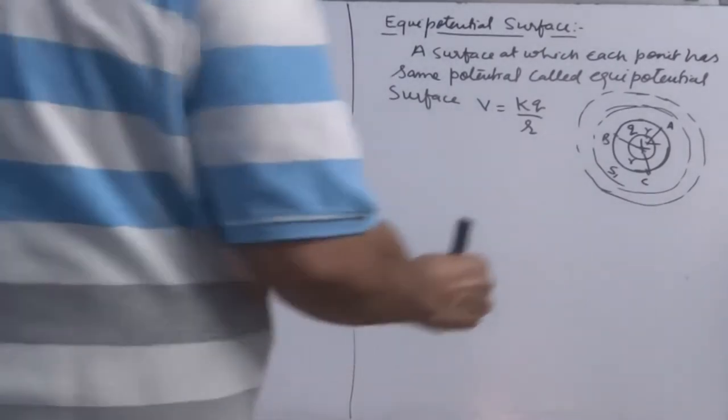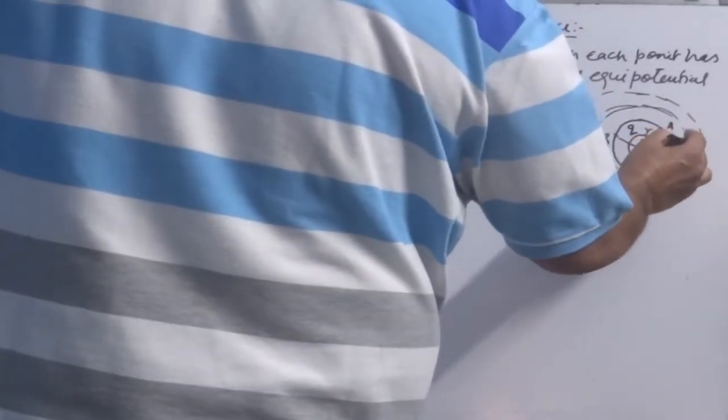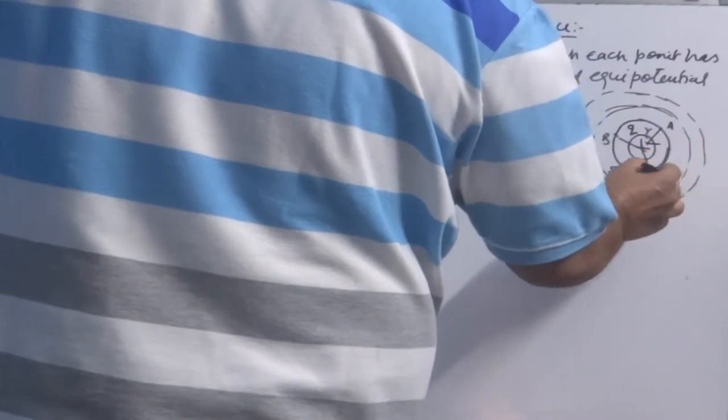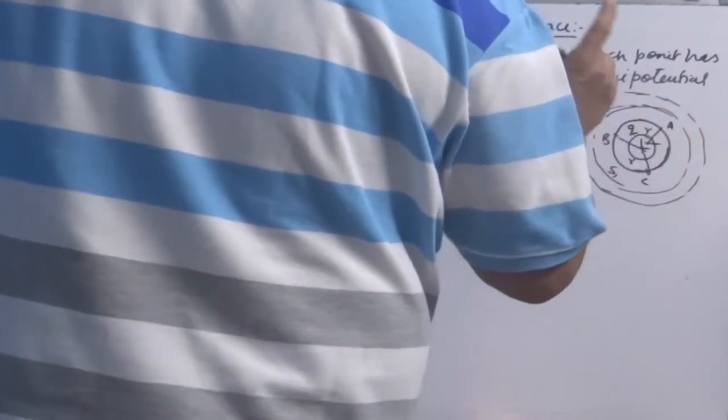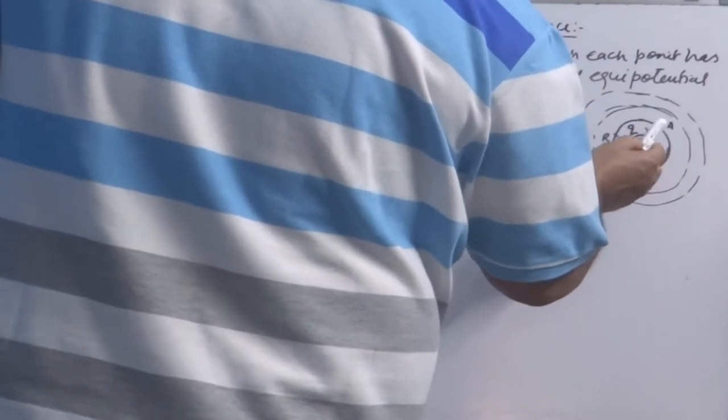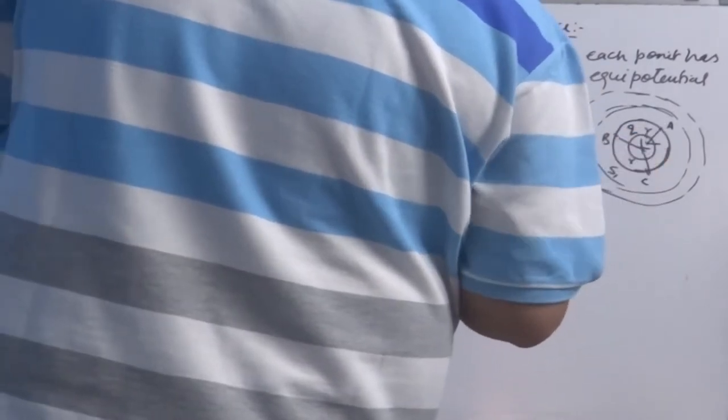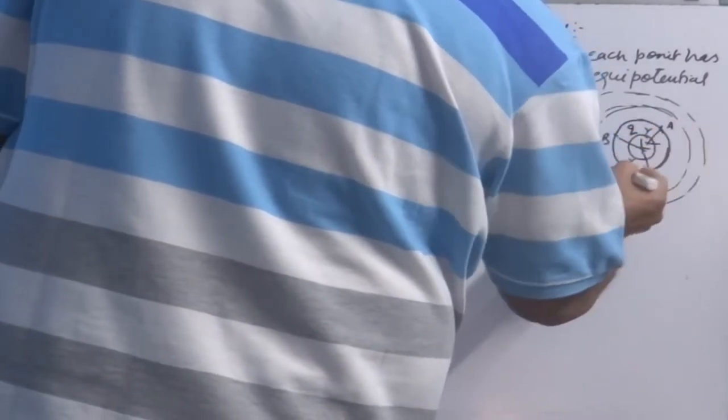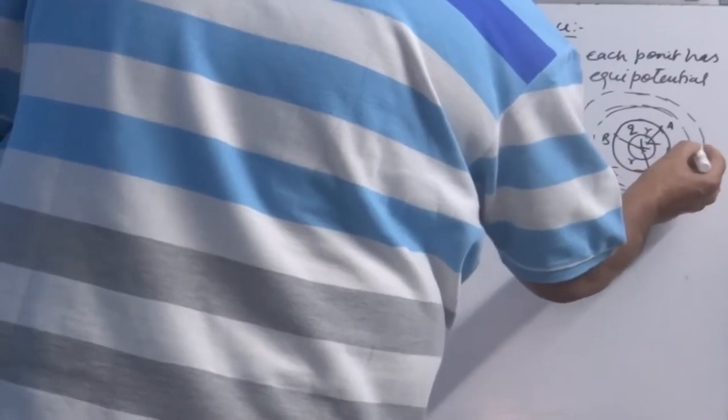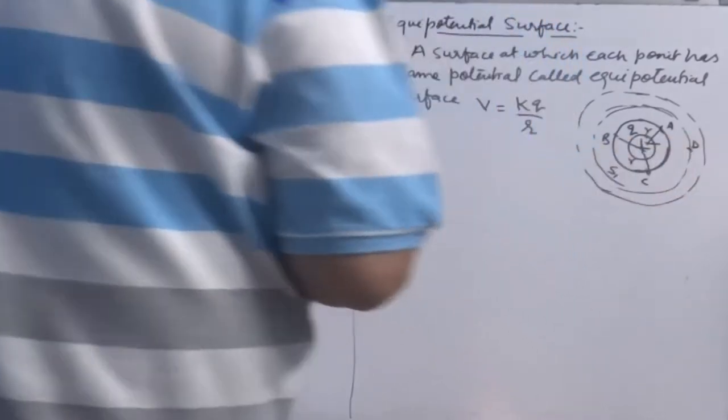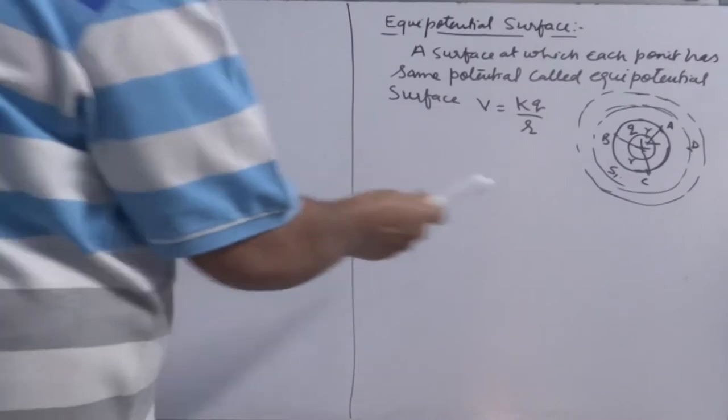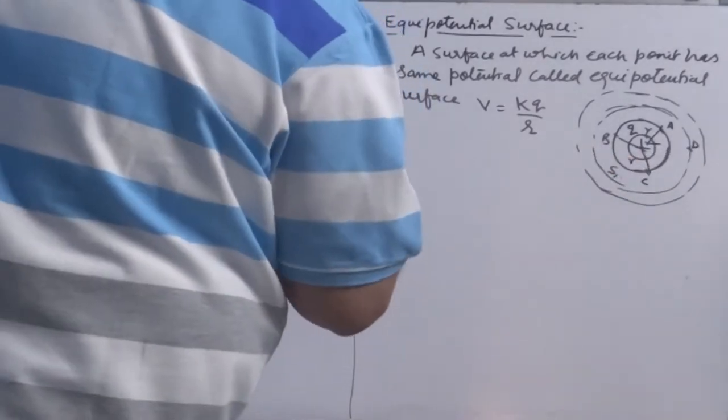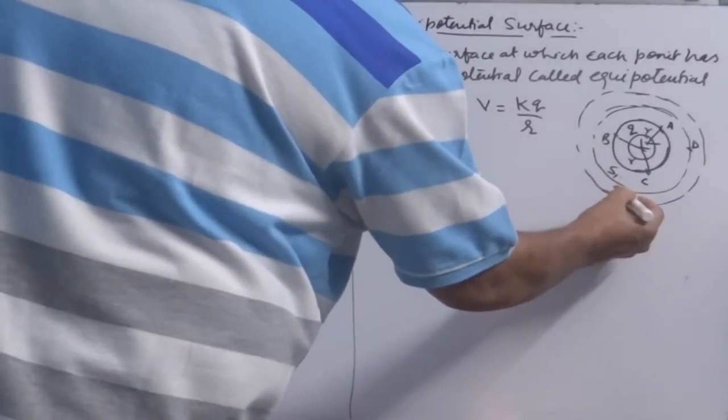In itself means potential at any point lying on surface 2 will be same. It does not mean potential of point A lying on surface S1 is equal to potential of point D which lies on surface S2 or sphere S2. These are not the same.